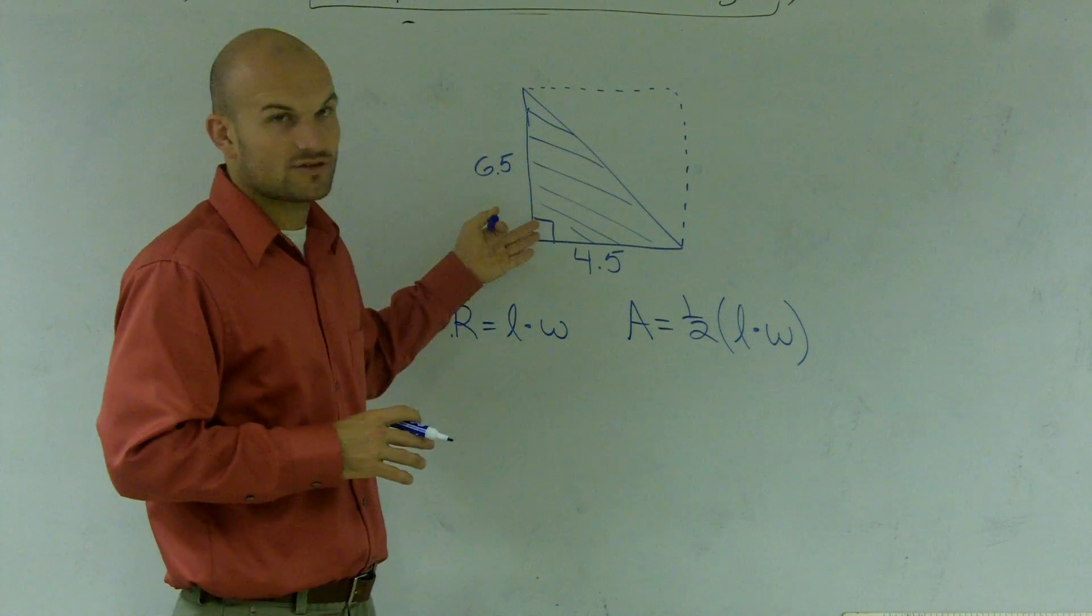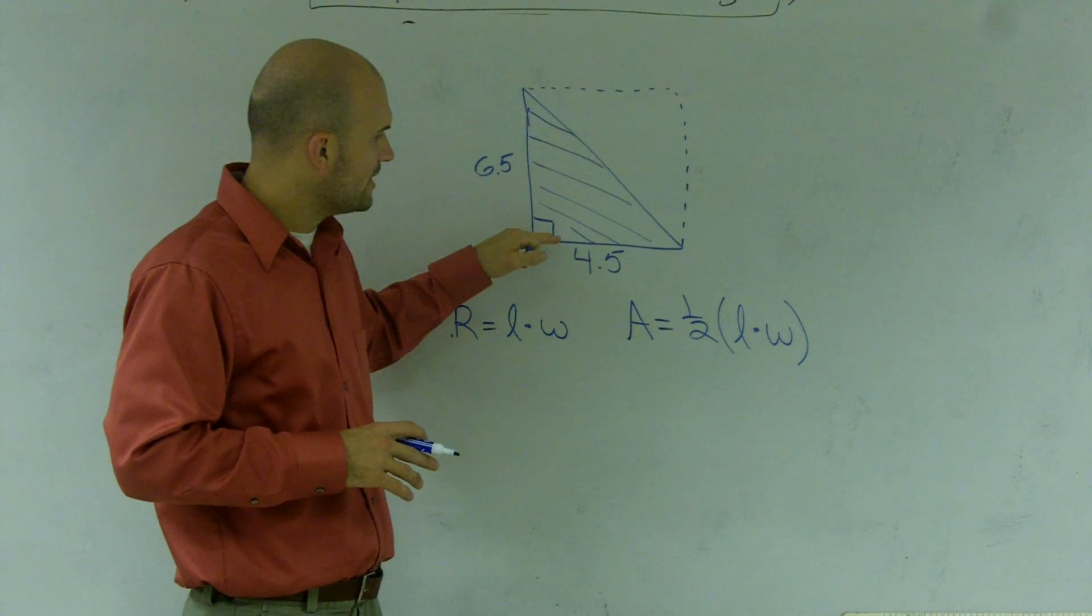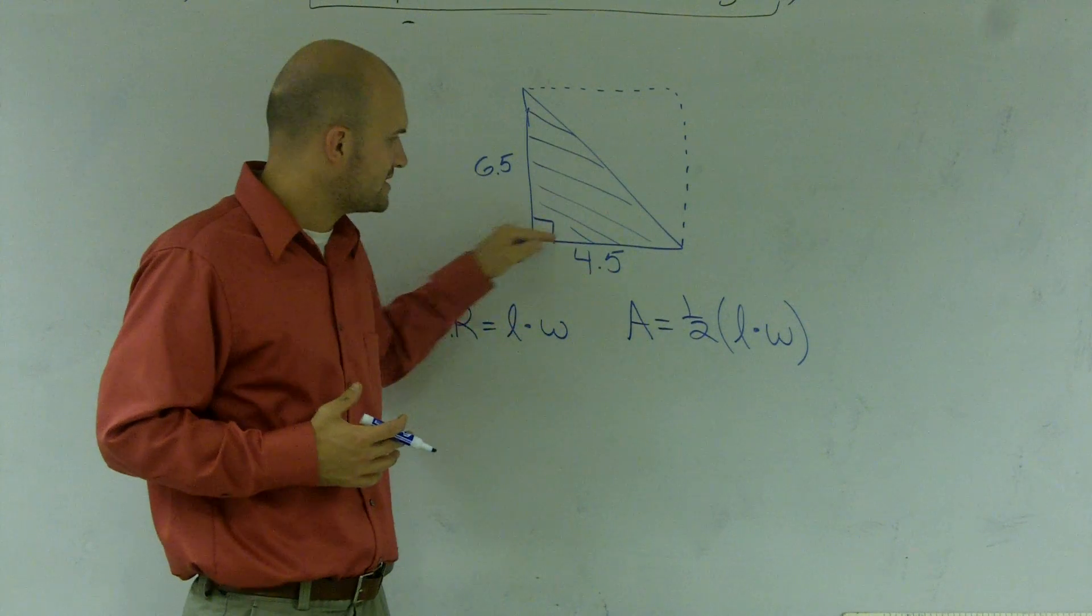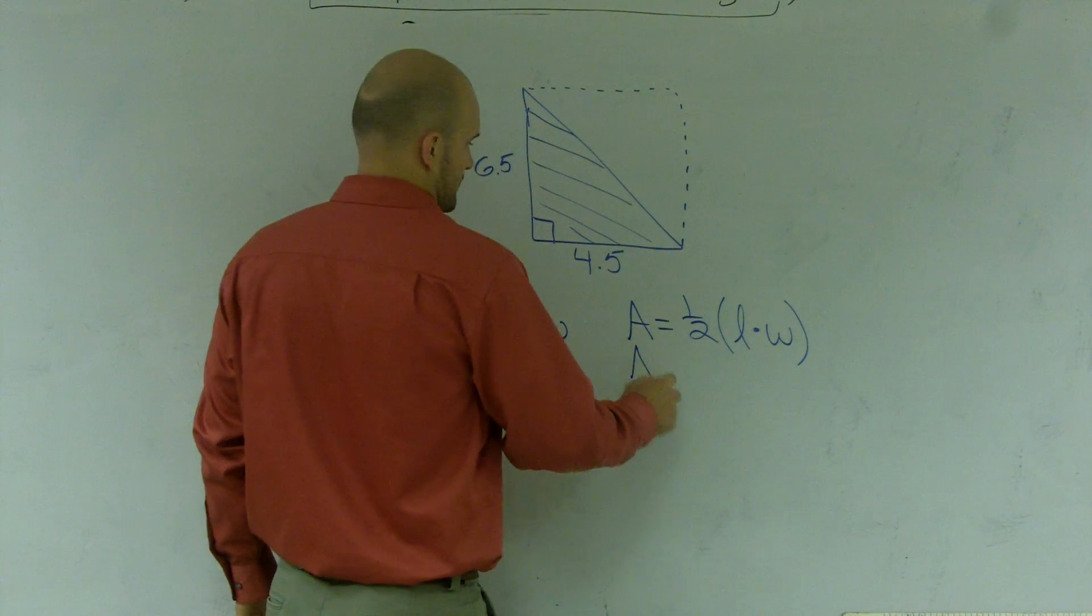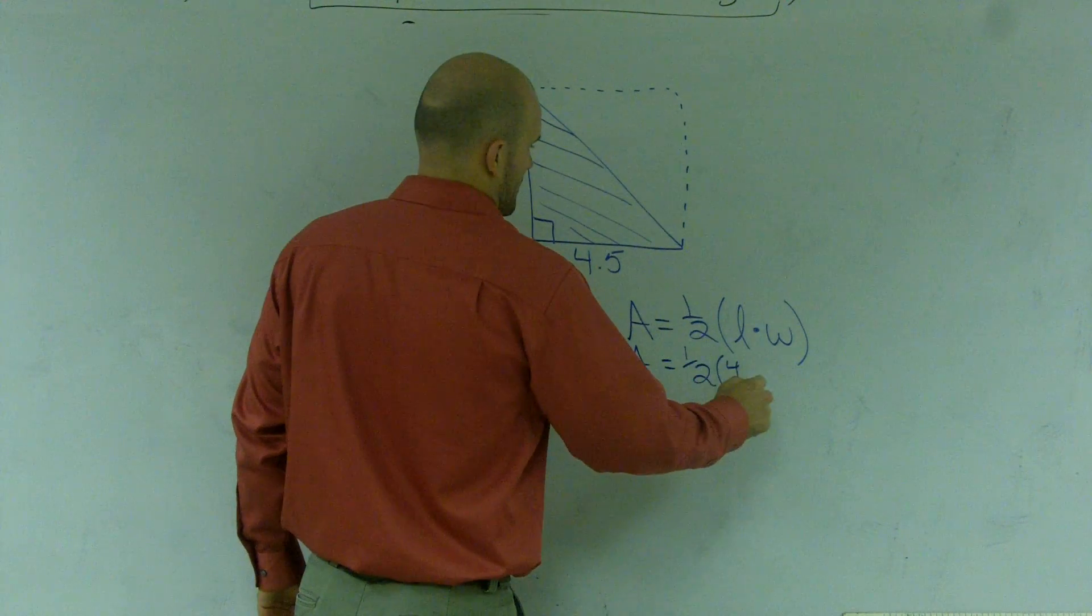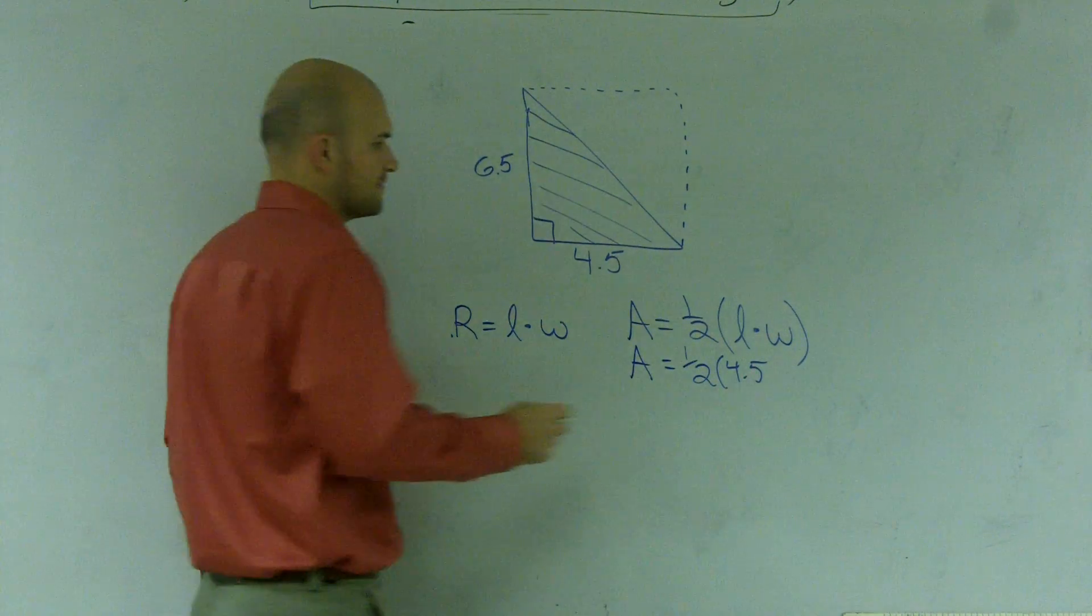But here, for this right triangle that has a right angle, we can just use length times width. So we take one length, which is 4.5, and then we multiply it by 6.5.